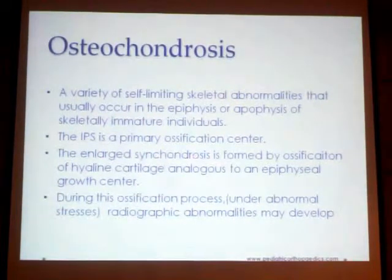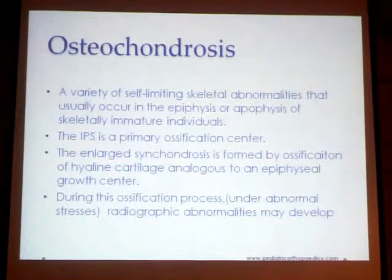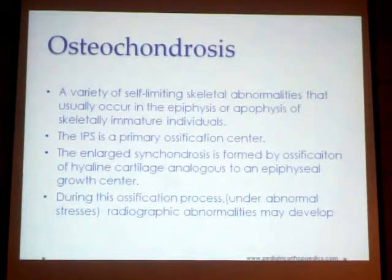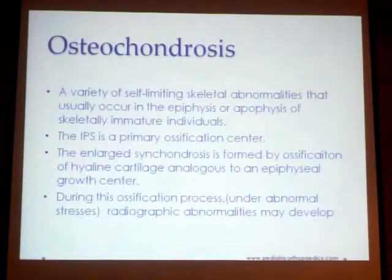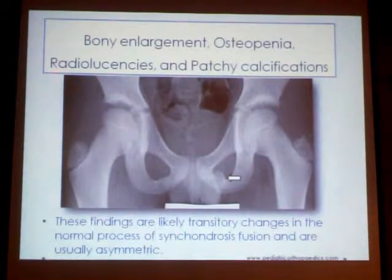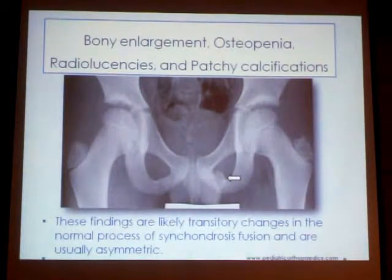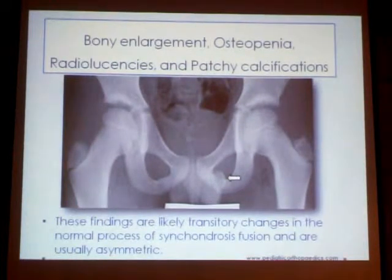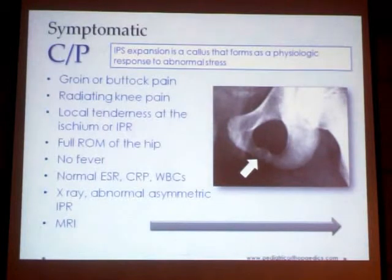The enlarged synchondrosis is formed by ossification of the hyaline cartilage through the epithelial growth centre. This abnormal ossification may result from abnormal stresses in children. The abnormal x-ray picture may show enlargement, osteopenia, radiolucency, and disorganized ossification. These findings are transient and mostly resolve with time without any problem.